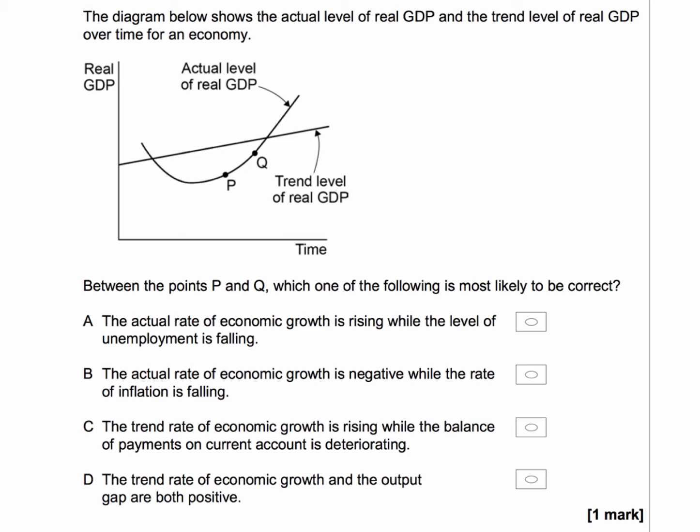Is actual GDP rising? Yes — we're in the upturn phase of the economic cycle, so actual GDP is rising beyond the trough of the cycle. What about cyclical unemployment? Yes, as the economy is growing and recovering, you'd expect to see cyclical unemployment — unemployment due to a lack of aggregate demand — you'd expect to see that falling. So in fact, A is the right answer.